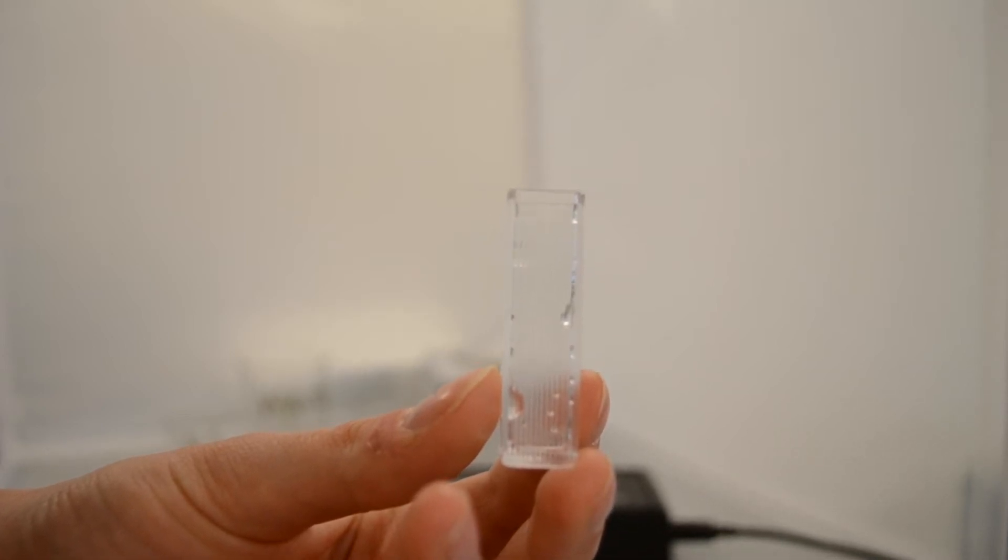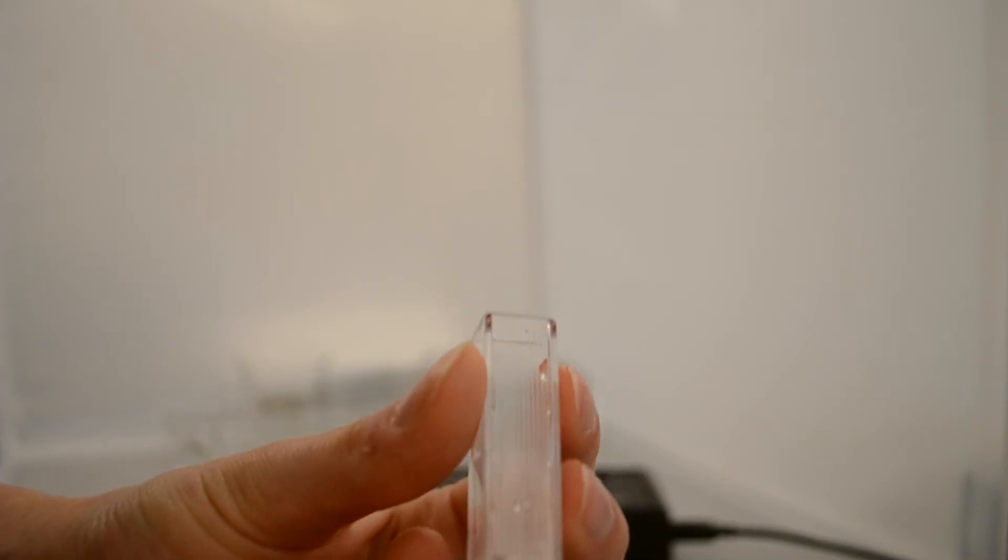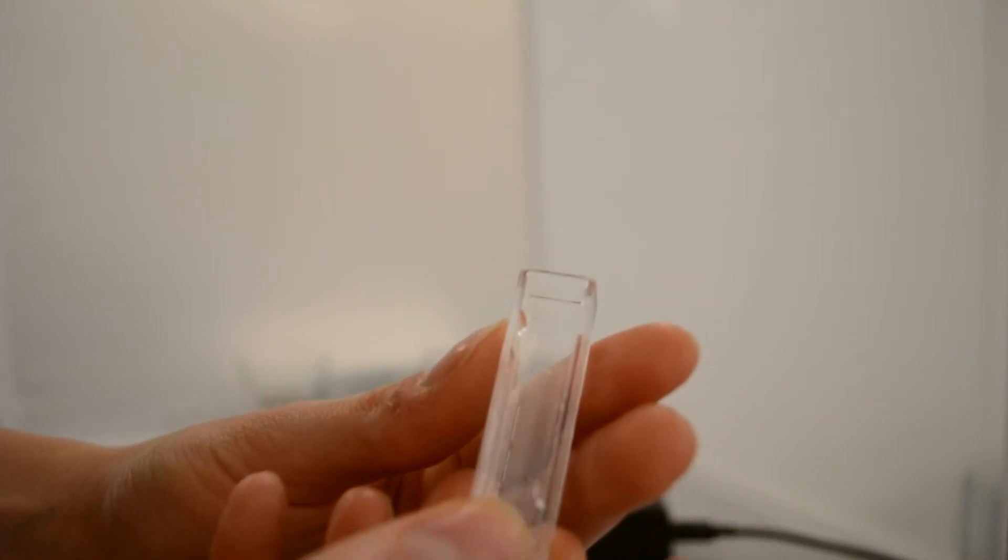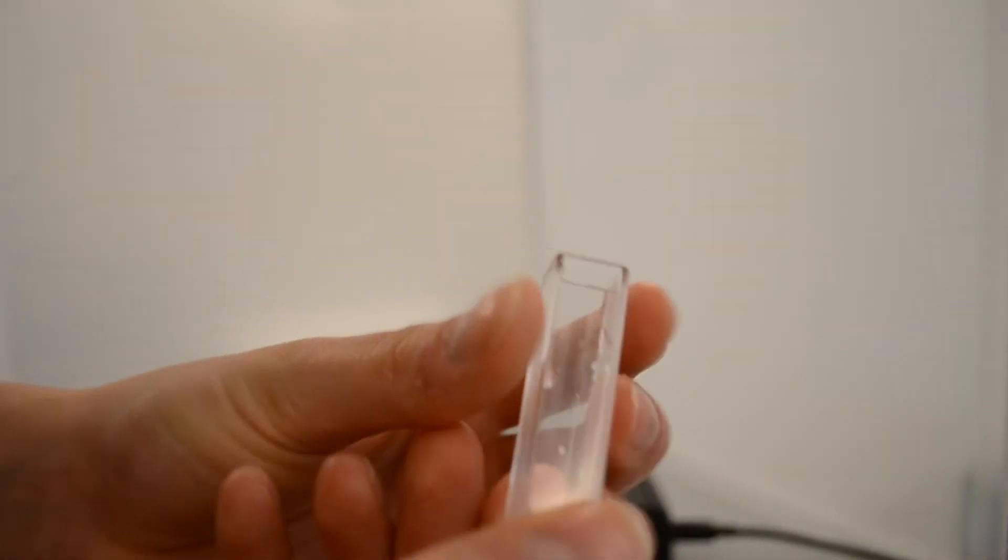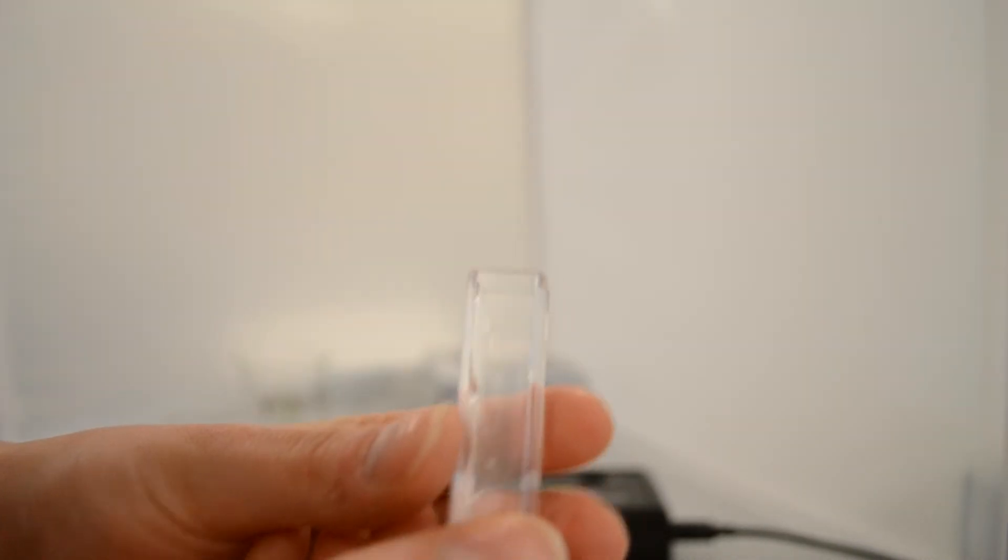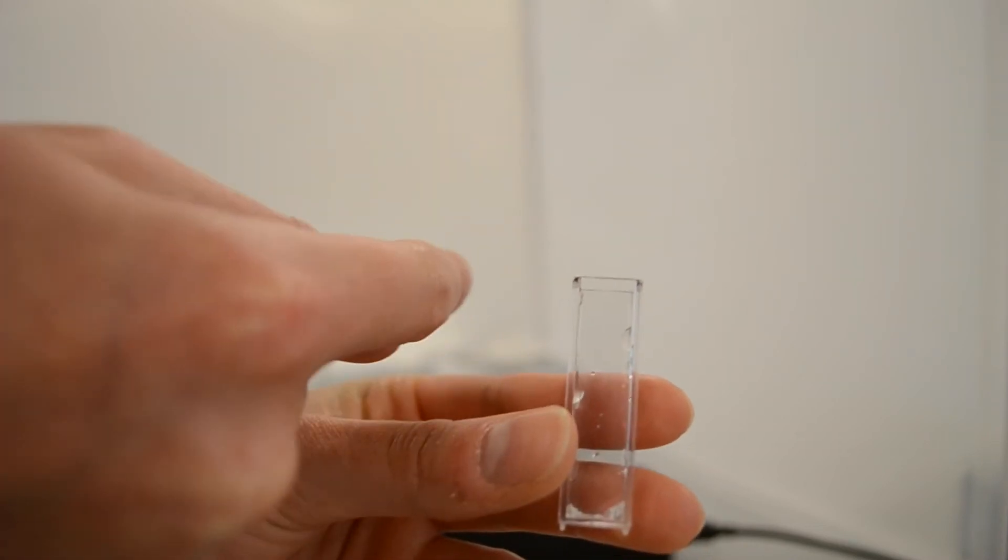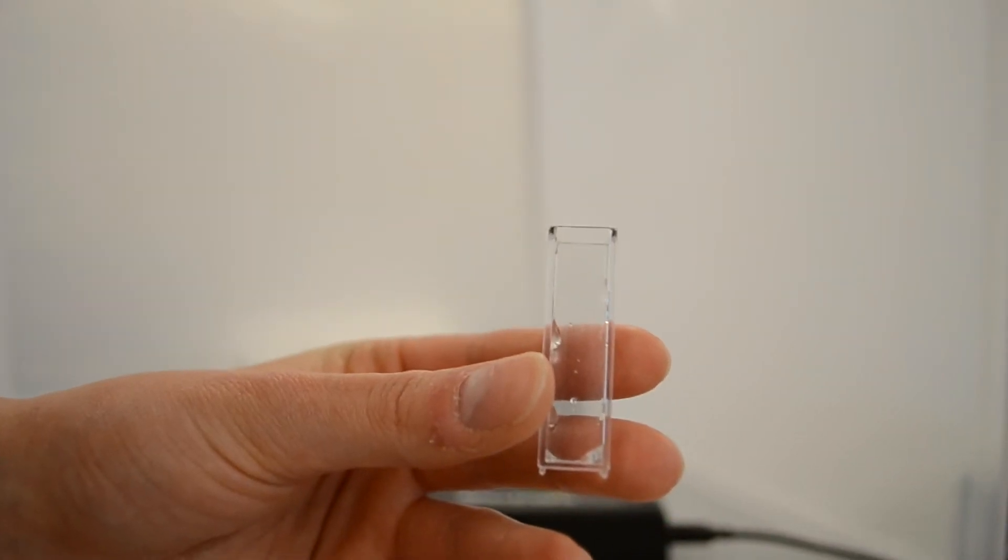The cuvettes have two frosted sides and two clear sides. The light has to run through the clear sides. The light in these specs run from the right to the left, so make sure to place the cuvette so that the clear sides are on the right and the left. If the light runs through the frosted sides, the data will be incorrect.